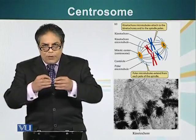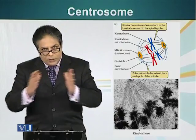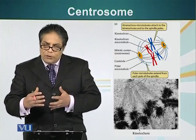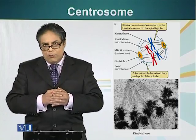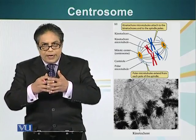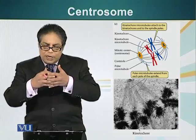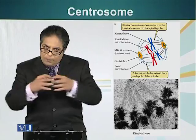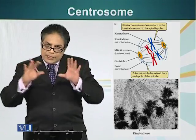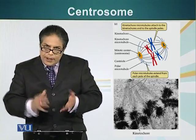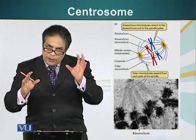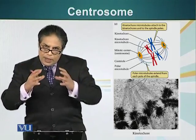When cell division happens, we have to separate the two sets of chromosomes, and force has to be generated. Microtubules are scaffolds along which motor proteins can move. We will see a video of it too. That force is generated between the microtubules, and when it is generated, the two centrosomes are pulled apart or pushed apart, resulting in two poles — each containing one centrosome and a set of chromosomes. In the next stage, a membrane is formed between these two sets of chromosomes and centrosomes, resulting in two different cells.